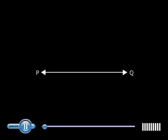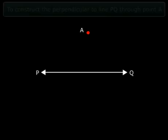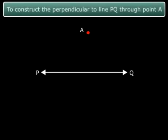Do you see line PQ? Yes. Do you also see point A? Good. Note that point A does not lie on line PQ. But we still need to draw a perpendicular to line PQ such that it passes through point A. So what do we do?